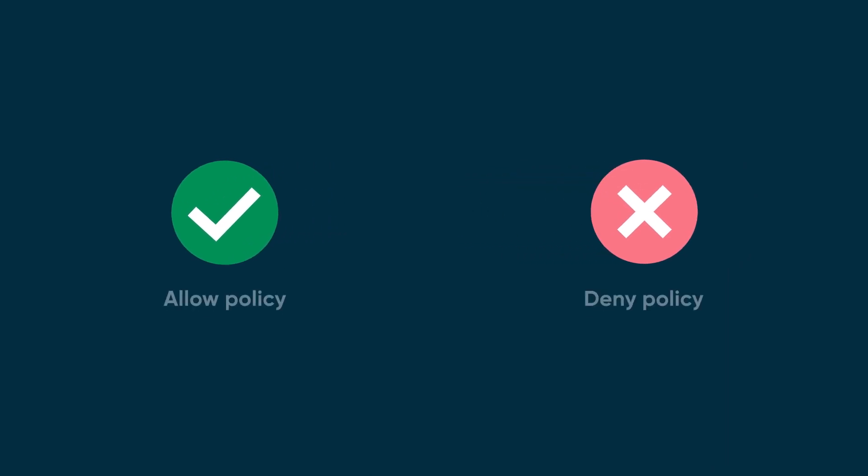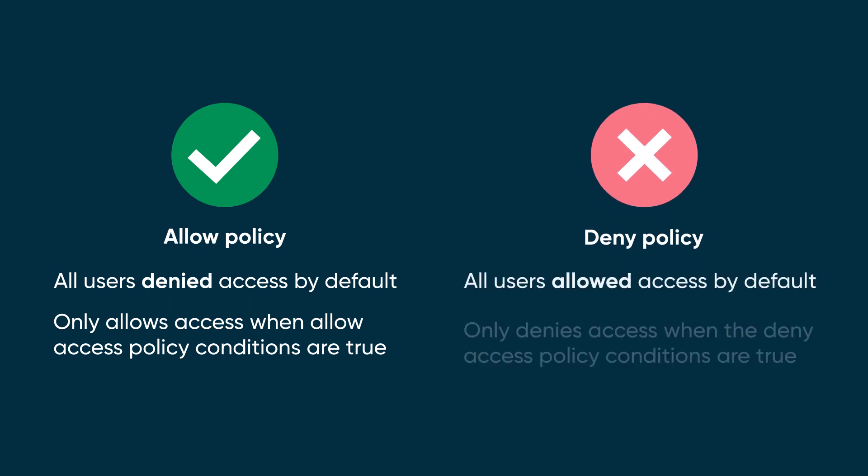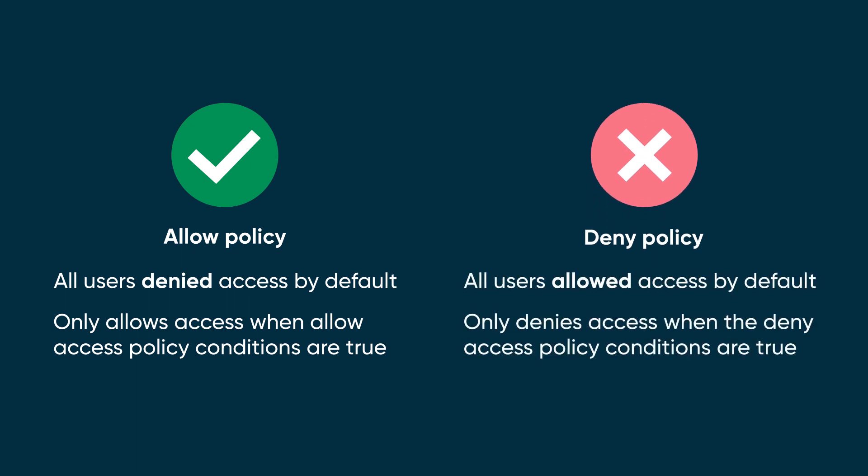These policies are direct opposites. With the Allow policy, all users are denied access by default, and it only allows access when the Allow Access policy conditions are true. With the Deny policy, all users are allowed access by default, and it only denies access when the Deny Access policy conditions are true.